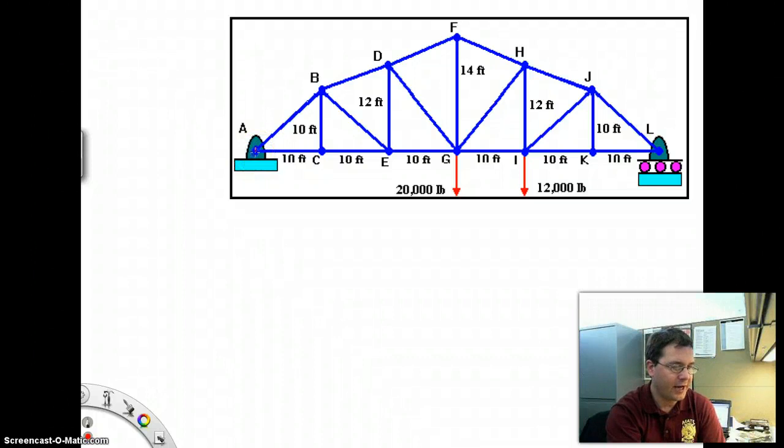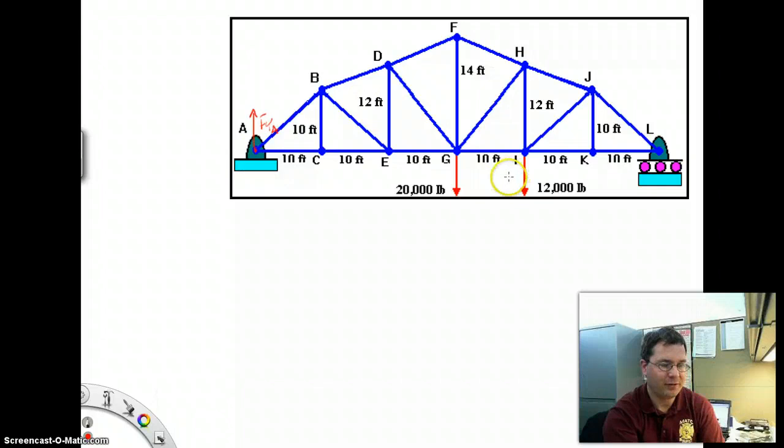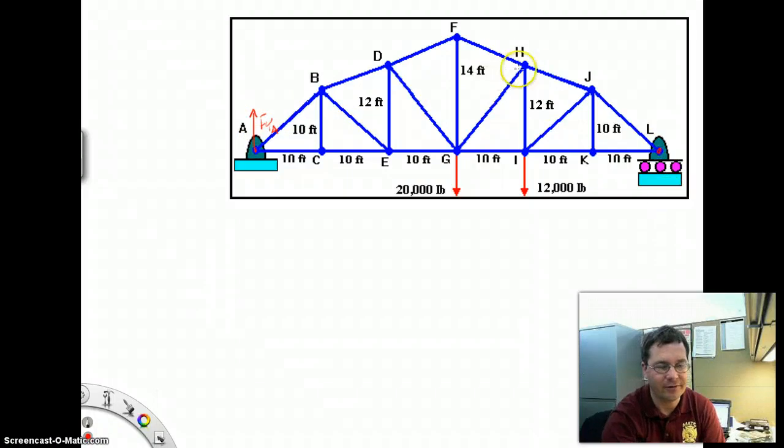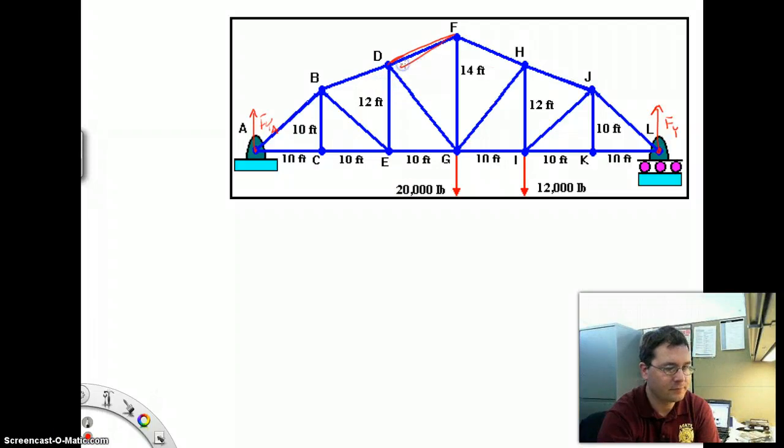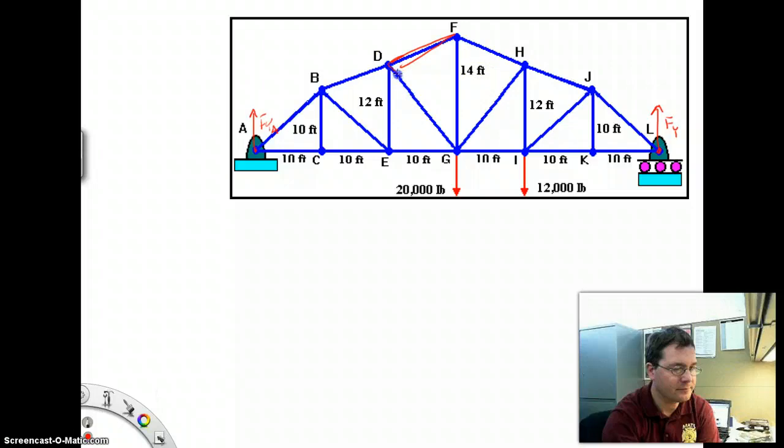The first thing that we're asked to find are reactions at point A. Looking at this structure, I know there's going to be a force in the y-direction at point A. I don't see any x-forces - there are no external x-forces. The right side anchor is on a roller, so the force in the x-direction at A is 0, as is the force in the x-direction at L. The remaining pieces we're asked to find are the force in part DF, the force in part DG, and the force in component EG.